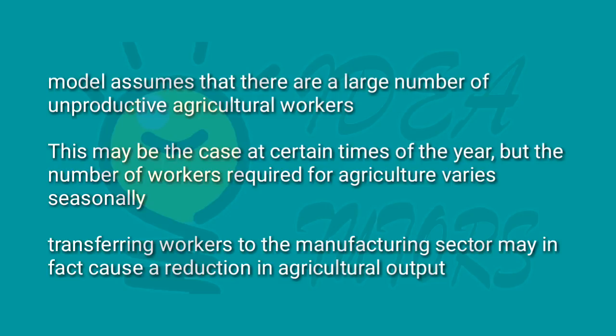A final key criticism is that the model assumes there are a large number of unproductive agricultural workers. This may be the case at certain times of the year, but the number of workers required for agriculture varies seasonally. At harvest, workers who were previously unproductive may become productive, meaning transferring workers to the manufacturing sector may in fact cause a reduction in agricultural output, even if those workers seem surplus for much of the year.